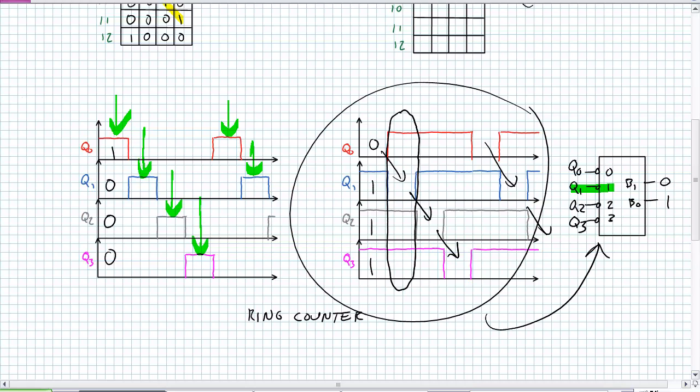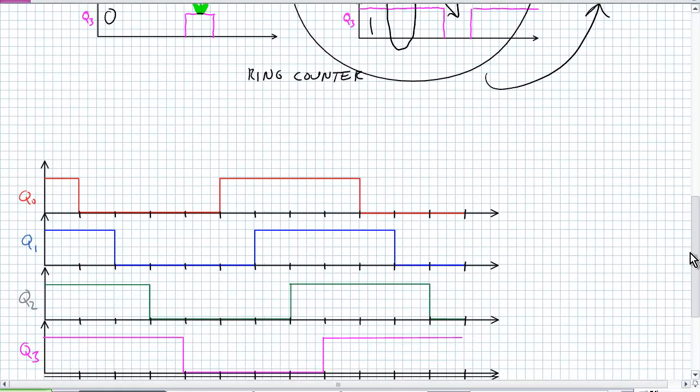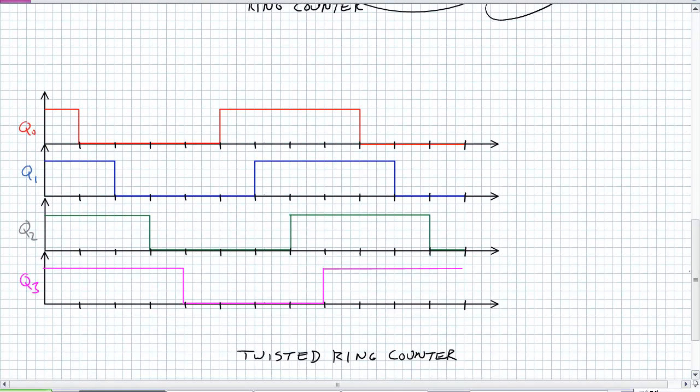Twisted ring counter waveform, what does it look like? Like I said, it's waveforms that are offset. Let's say that is time zero. It was all zeros. What is being shifted? We're shifting right. Everybody's still shifting right. What's being shifted in? The inverse of that Q3. Then we shift right again. Everybody shifts right. What's being shifted in? The inverse of Q3. And what you get is these offset waveforms, which you could potentially apply to some combinational logic circuit.